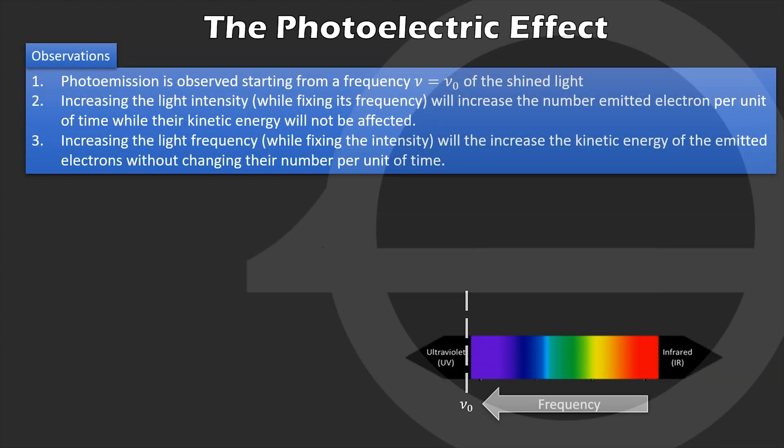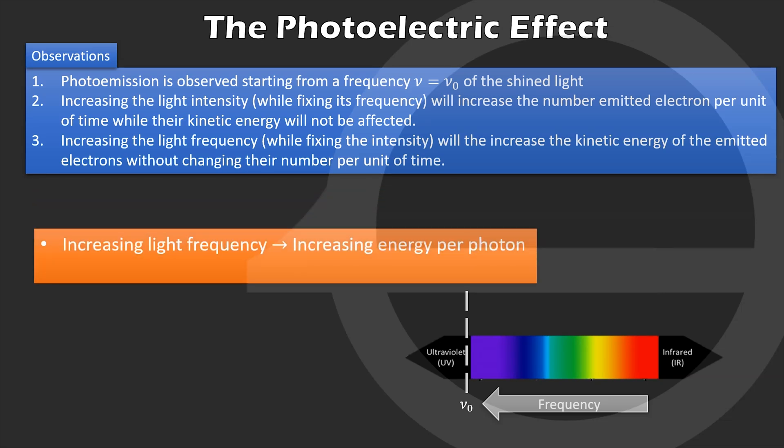Now we can easily understand our previous observations. Increasing the light frequency is nothing but increasing the energy per photon of the incident light, while increasing the light intensity on the other hand is increasing the number of incident photons per unit time, and thus the photon's flux.